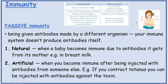Active immunity — memory cells are produced. But in passive immunity, memory cells aren't produced. In active immunity, protection is long-term because the antibody is produced after activation of memory cells in response to a complementary antigen being present in the body. With passive, the protection is short-term because the antibodies given are broken down.